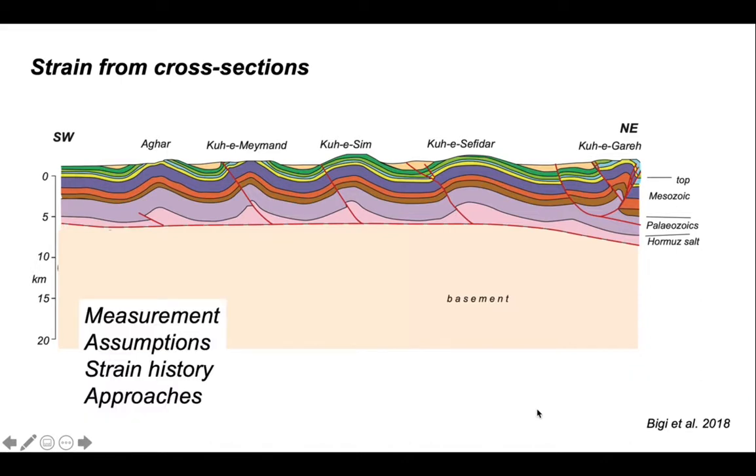We'll look at how strain can be measured on cross-sections and some of the assumptions that might underlie these measurements. We'll examine a crustal-scale strain history and then draw a note of caution as to how large-scale heterogeneous strains should be reported so that comparisons can be made appropriately from place to place.